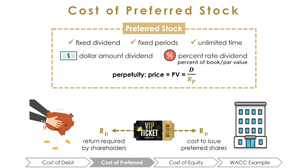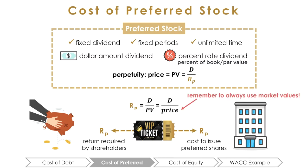We can rearrange this formula into RP = D / PV, where D is the dividend given per year and PV is the current market value of the preferred stock, which can be found on the stock market.